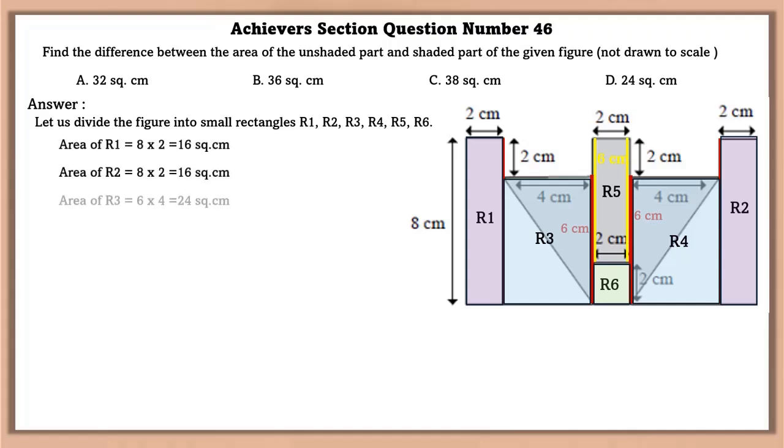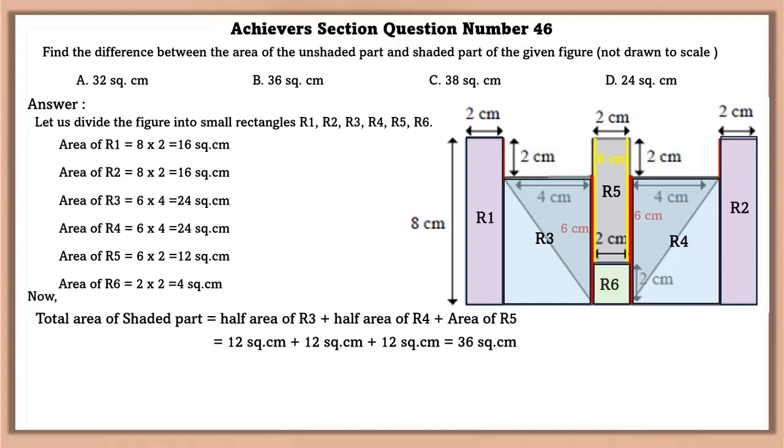Now that we know all the sides of the rectangle, we can find the area. Here are the areas listed below from rectangle 1 to rectangle 6. Now total area of shaded part is equal to half area of rectangle 3 that is 12 square centimeter plus half area of rectangle 4 that is 12 square centimeter plus area of rectangle 5 that is 12 square centimeters. The total is 36 square centimeters.